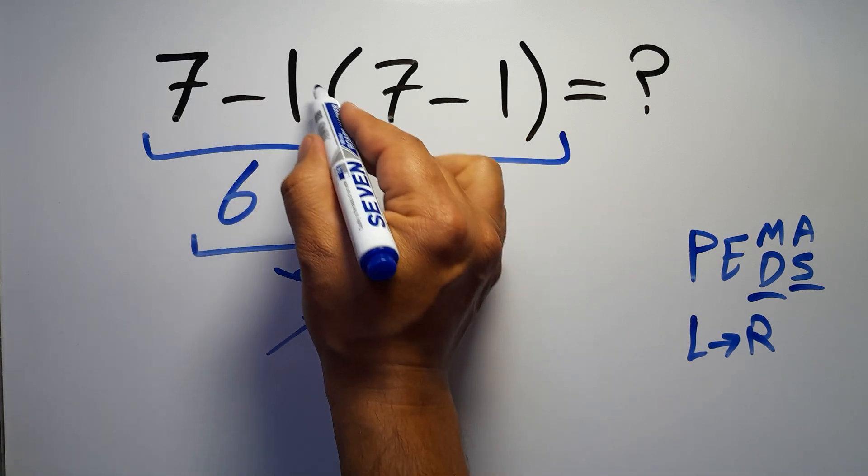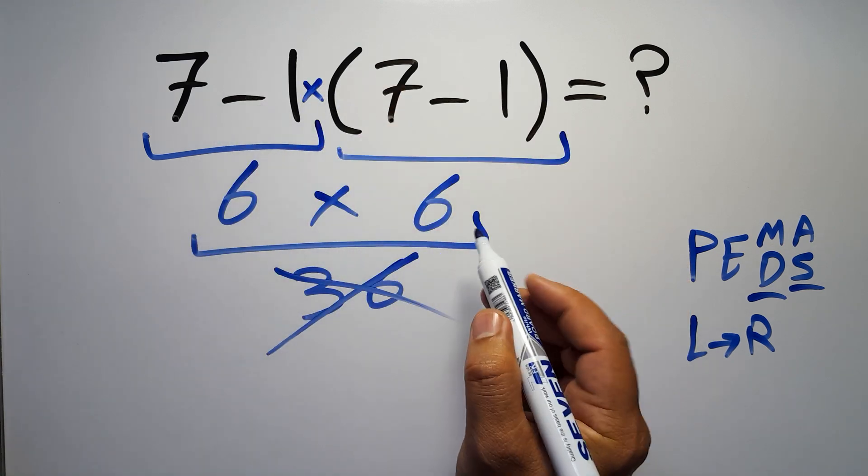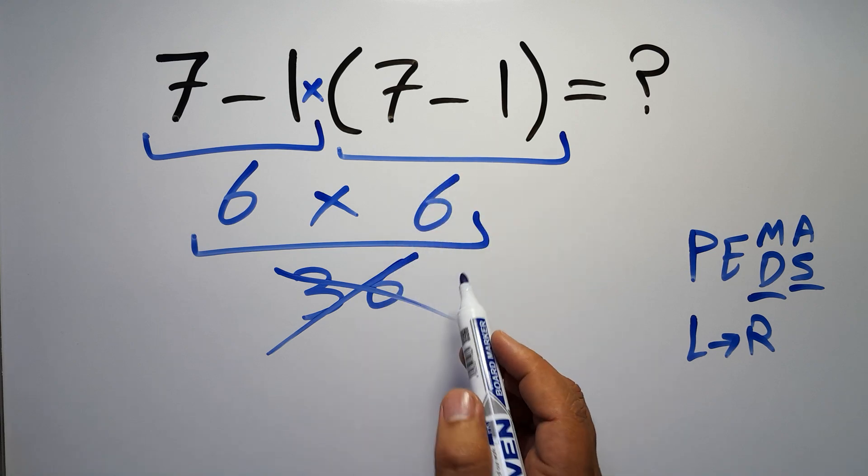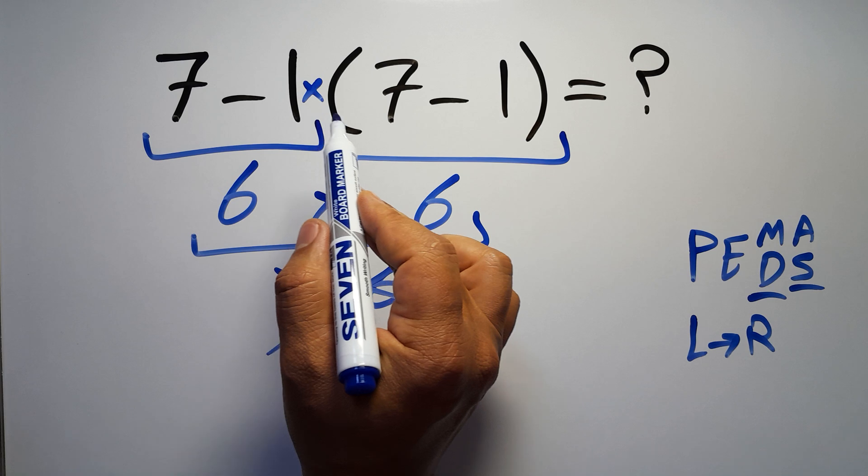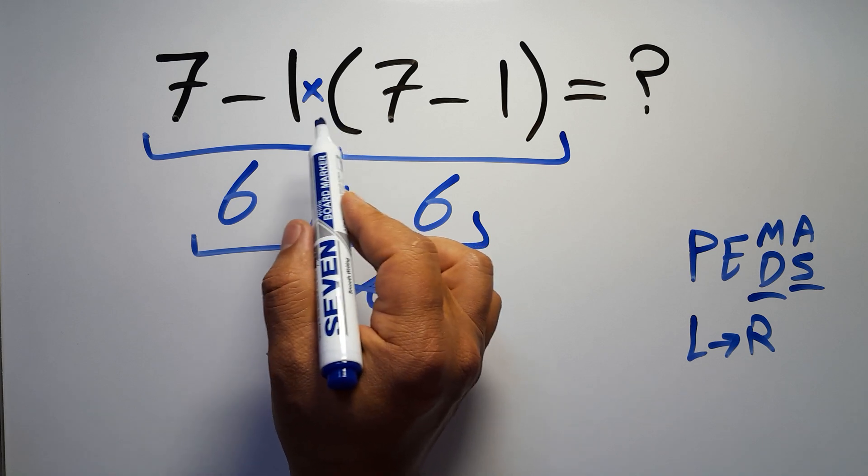In this expression we have one subtraction, one multiplication, and one parentheses. Inside this parentheses we have one subtraction. Here we have a multiplication because in mathematics when a number is placed next to parentheses it means multiplication, and we usually don't write the multiplication sign for brevity.